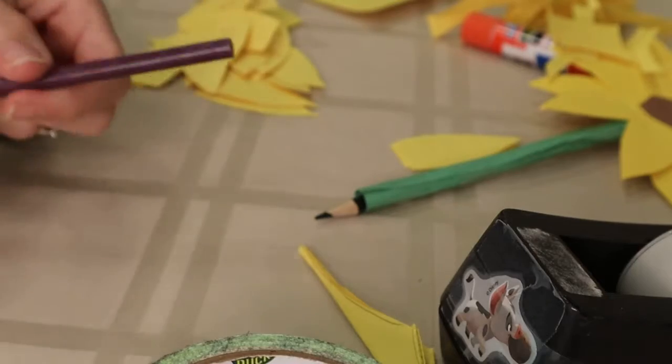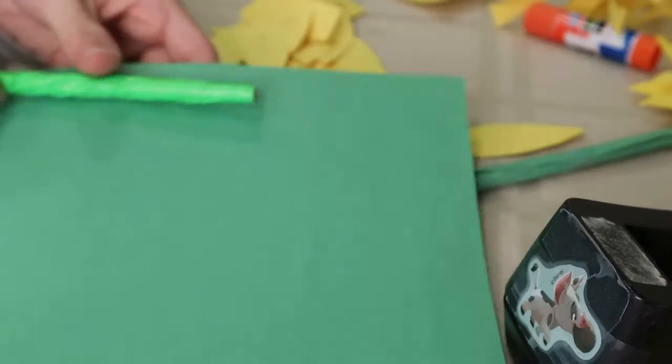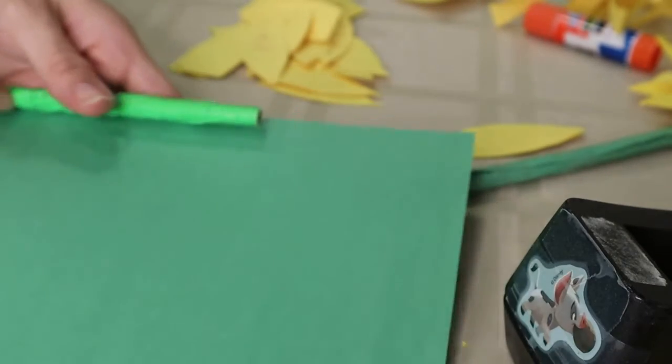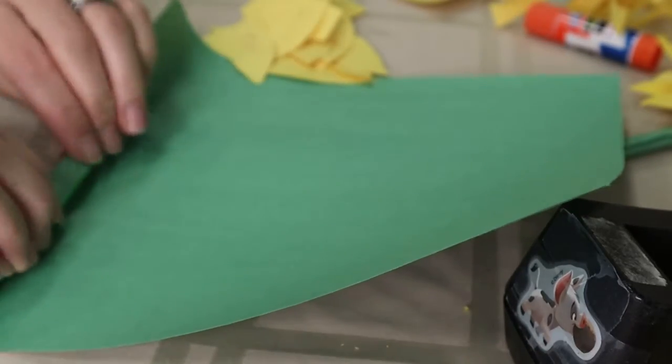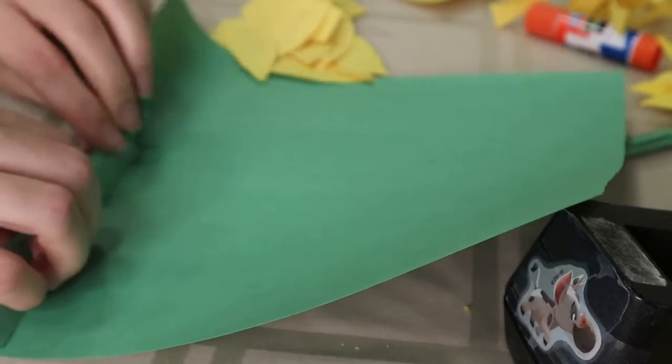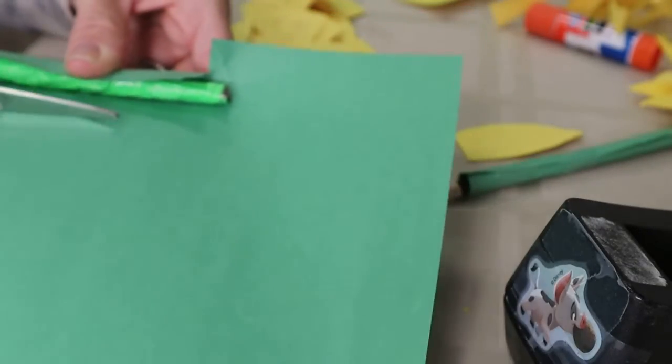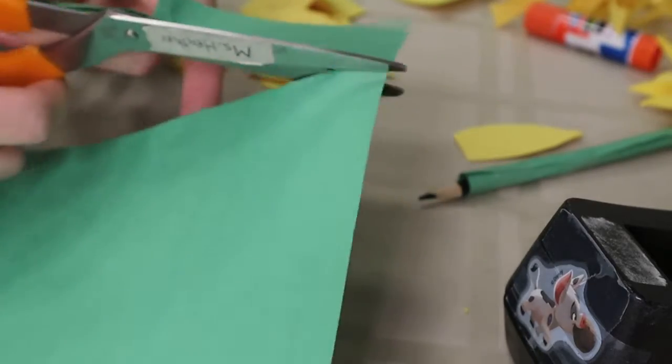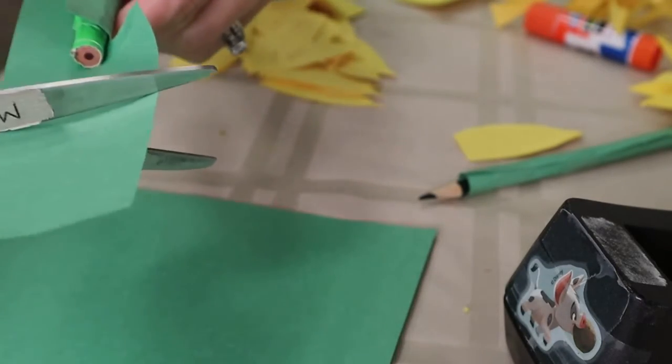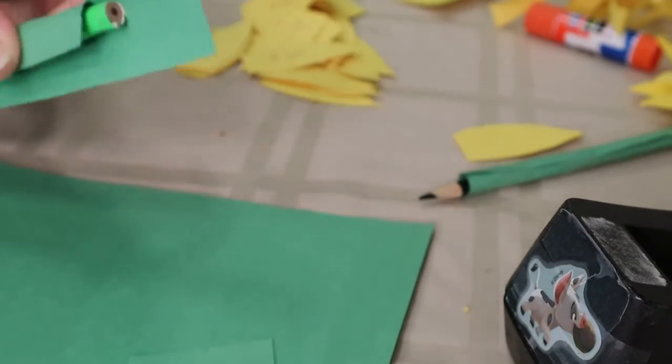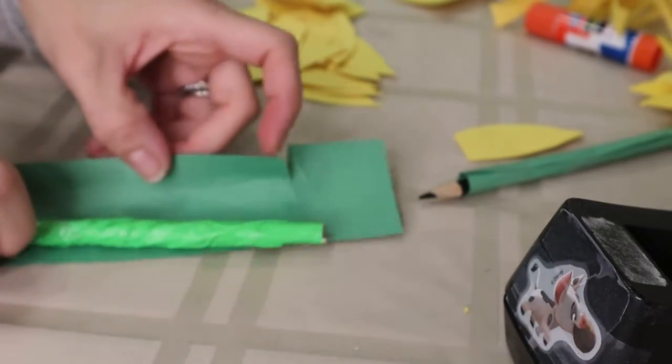And I'm going to make my stem. So you're going to take some paper, just going to measure so that the paper fits around your pencil. Take your scissors and cut a strip out of the paper. You want to cut the paper a little bit past the top of your stick or pen or whatever.